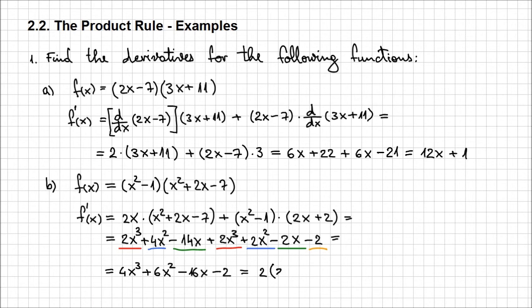If you wish, you can factor out 2 to get 2(2x³ + 3x² - 8x - 1). And once again, even though the expression wasn't so simple, using the product rule we found the result quite easily.